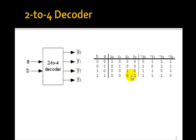Only one of the Ys is 1, depending upon what the input is. If the input is, say, 1, 0, then Y1 is 1. If it's 1, 1, say 3, then Y3 is 1.